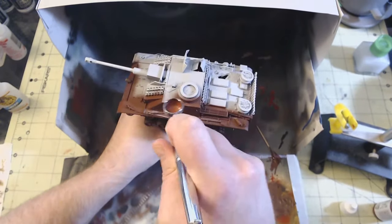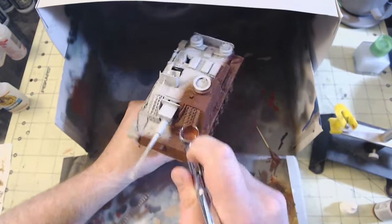Oh, and the tank destroyer proper did get a quick coat of Mr. Primer Surfacer 1000 to get all of that PE ready for paint.